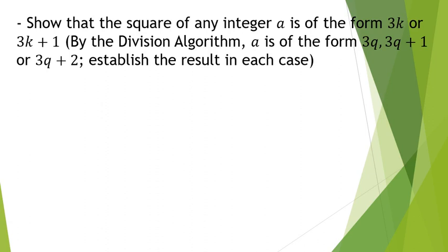If there are a lot of cases, I may only ask you to establish the result for particular cases — we'll see that later on in this video. So we have to show that if a is of the form 3q, we get something of the form 3k or 3k plus 1; if a is of the form 3q plus 1, then a squared is of that form; and if a is of the form 3q plus 2, then a squared is also of that form. Let's get right into the first case.